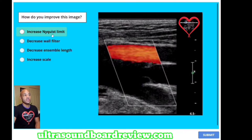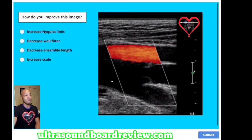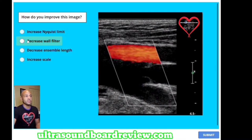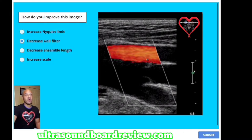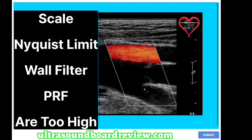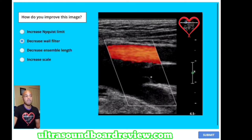How do you improve this image? A) increase Nyquist limit, B) decrease wall filter, C) decrease ensemble length, or D) increase scale? Based on the choices, we're going to decrease something because something is turned up too high. Decrease wall filter is the best choice. You're not going to decrease ensemble length, you're not going to increase scale because it's already increased, and you're not going to increase Nyquist limit because that's already increased. Your scale, Nyquist limit, wall filter, and PRF are all turned up too high, eliminating color Doppler in this area while preserving it elsewhere. Once we decrease those settings — because when you change one, they all change together — this will fill in. Always choose the best option.